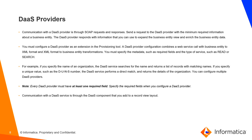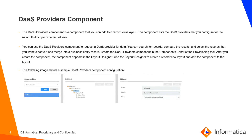Communication with the DAST service is through the DAST component that you add to a record view layout. The DAST provider component lists the DAST providers configured for the record opened in the record view. You can use it to request a DAST provider for data, search for records, compare results, and select the record to convert and merge into the business entity record. Create the DAST provider component in the component editor of the provisioning tool, then use the layout designer to create a record view layout and add the component to the layout.